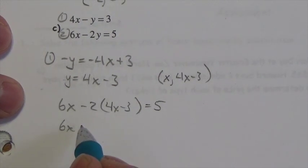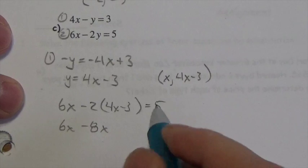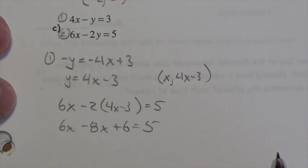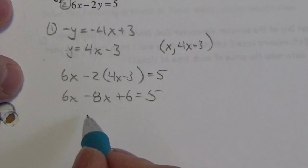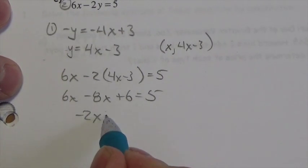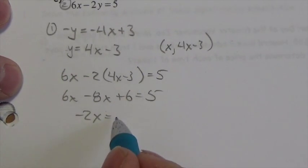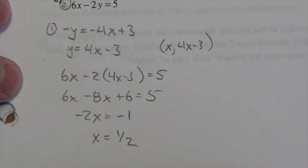Distribute the coefficient: 6x minus 8x is negative 2x, plus 6. Subtract 6 from both sides and I get negative 1. So x is equal to positive one-half.